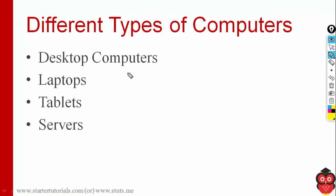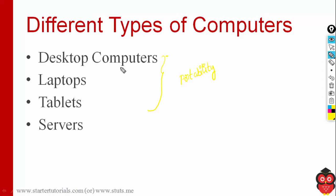Let's see different types of computers. Except the last one — server — the remaining three categories are categorized based on the factor called portability, that is, how easy it is to carry the device from one place to another. The different types of computers based on portability are desktop computers, laptops, and tablets.